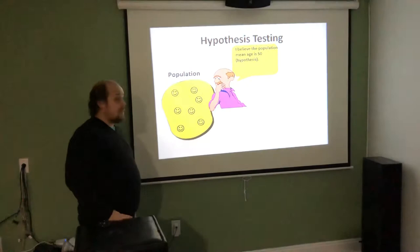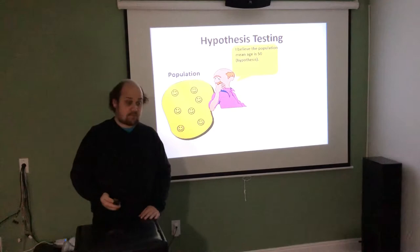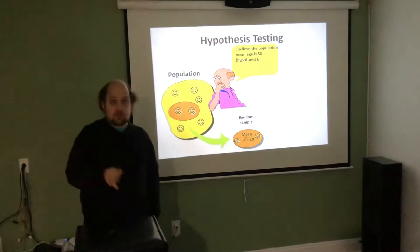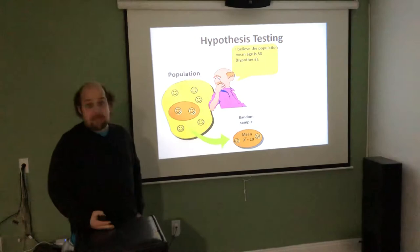This guy comes into our classroom and says, 'I believe the mean age is 50' — so in this class of college students, he thinks the average age is 50. After getting sample data, asking all the students their age and dividing by how many students there are, he realizes that the sample mean is only 20 years old.